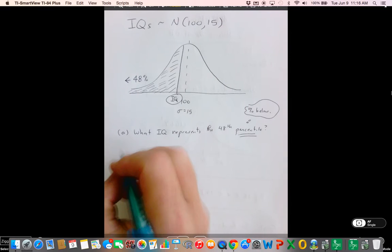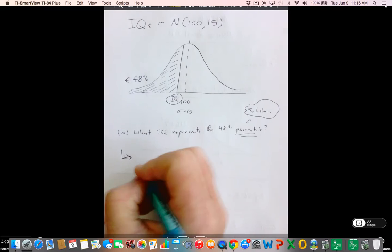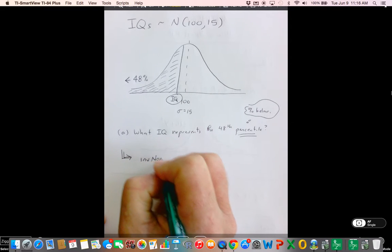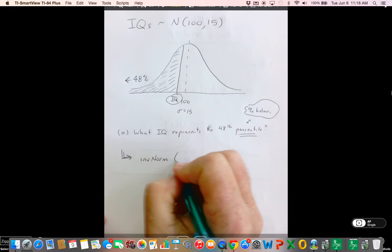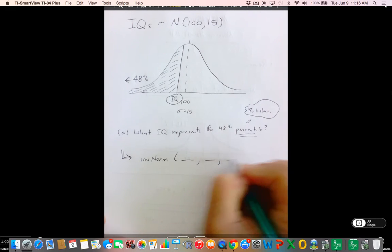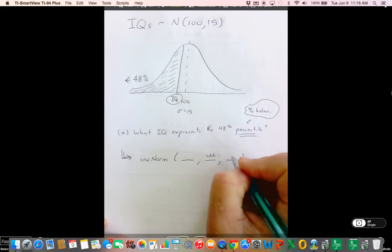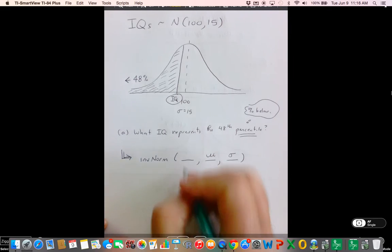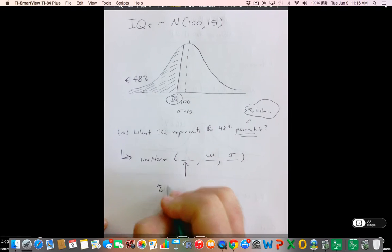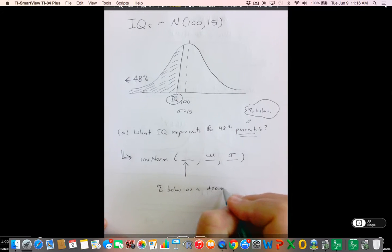Well, guys, it turns out we have a handy-dandy key on your calculator that works these types of problems called inverse norm. And inverse norm, unlike normal CDF, requires you to put in three entries and not two. So inverse norm requires three. Put in four, it's going to give you an error. It's just not going to work. So what you do here, the last two things are still the mean and the standard deviation, but what goes here is percent below as a decimal.